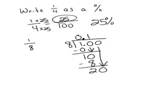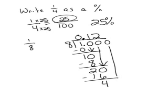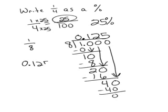And then I'm going to add on some zeros because I'm not done. Bring it down. Eight goes into twenty two times. Two times eight is sixteen. Eight times five is exactly forty. And I'm down to zero, so I'm finished. So I have a decimal of zero point one two five.